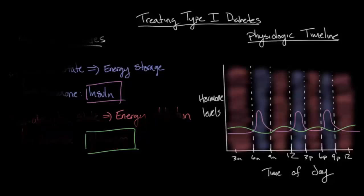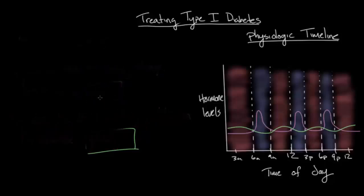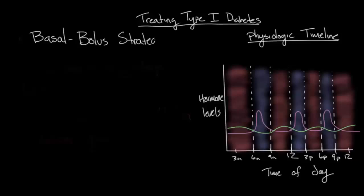To get a better understanding of this, let's erase some of our work. Fortunately, physicians and pharmacologists have created a very elegant method for treating type 1 diabetes. This method is known as the basal bolus strategy. And in order to understand this concept a little bit better, let's first talk briefly about insulin.